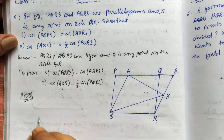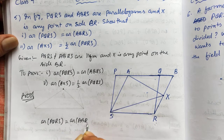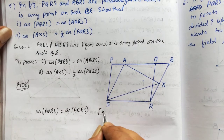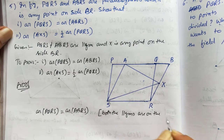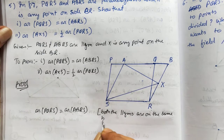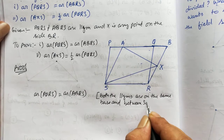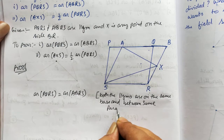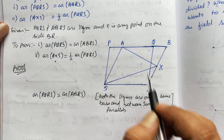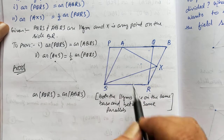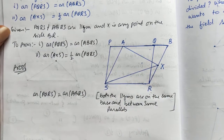First proof can be done directly. We can say that area PQRS is equal to area ABRS, because both the parallelograms are on the same base and between the same parallels. ABQRS is on the base RS, and ABRS is also on the base SR, and they are between the same parallels.